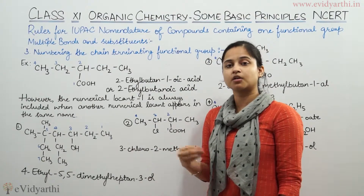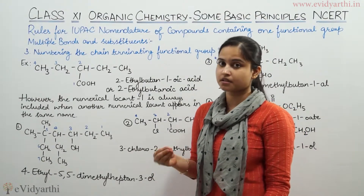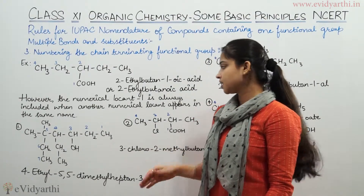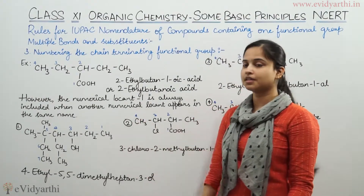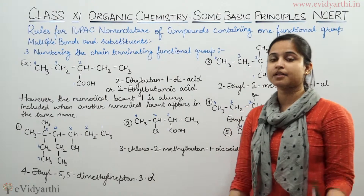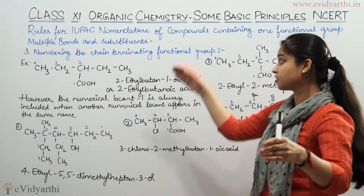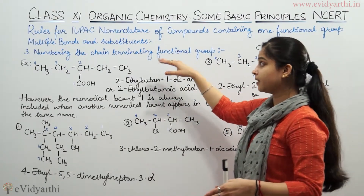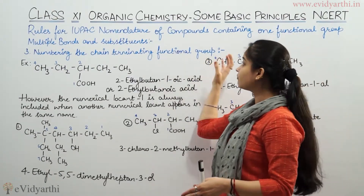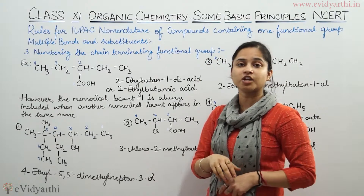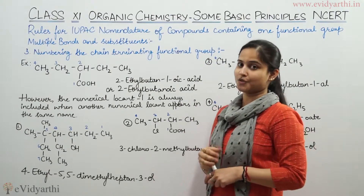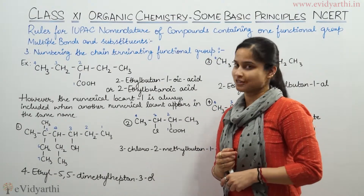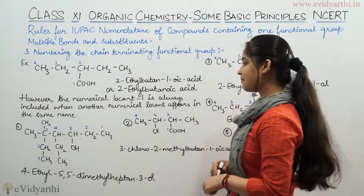There are further examples in which you will see that I have not dropped the '1' from the name, because there are some other locants present in the same compound name. So let's begin with some examples so that you understand the rule about numbering the chain-terminating functional group better and better.